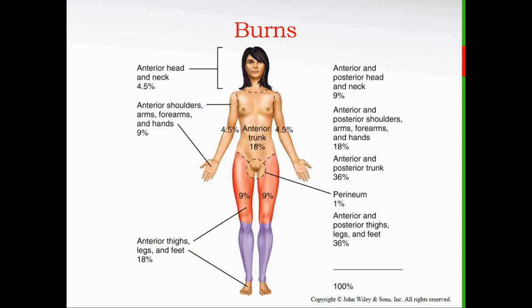Looking at the diagram: just the front of one arm is four and a half percent; front and back together is nine percent; both arms are 18 percent. Front and back of head and neck is nine percent. The trunk front and back is 36 percent. The perineum or urogenital area counts as one percent. Both legs front and back total 36 percent. All values add up to 100 percent.